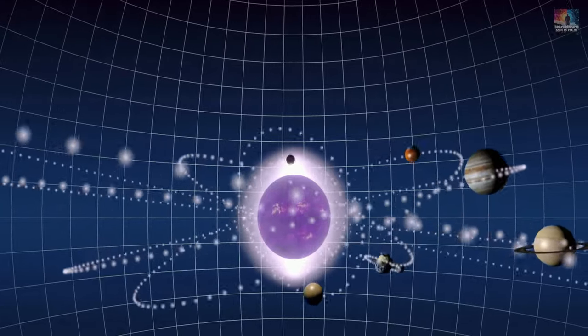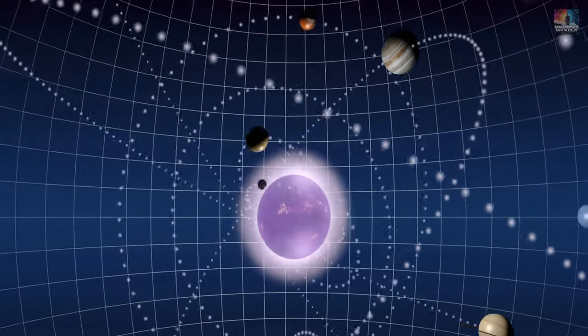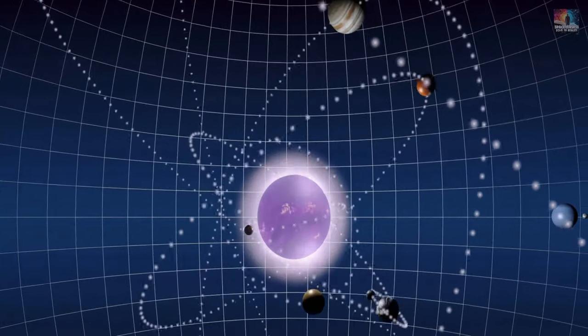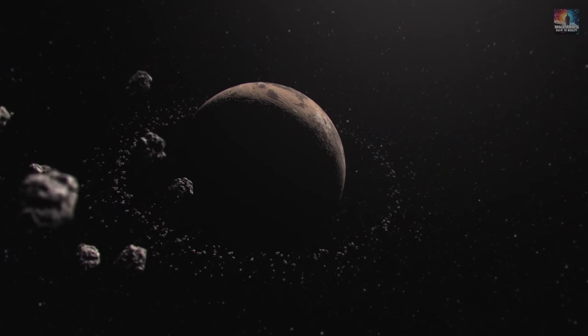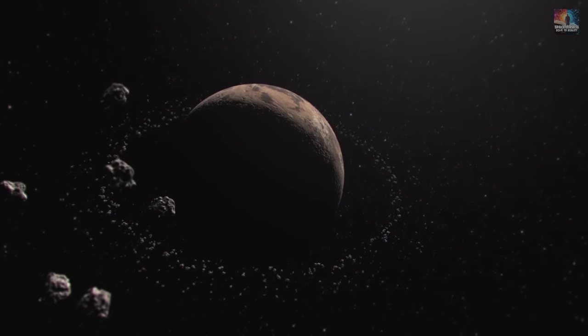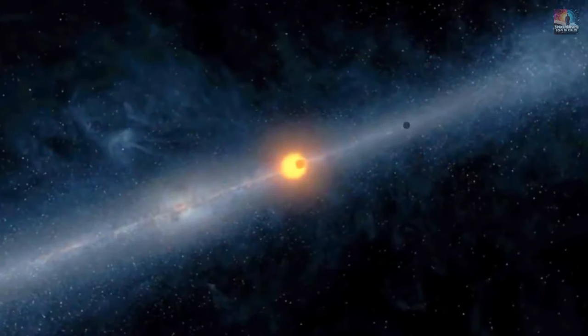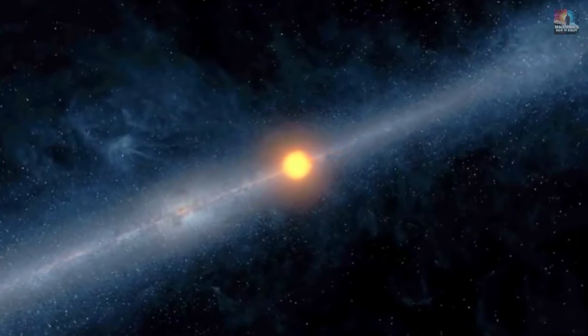So when it comes to the three-body problem, the exact positions and speeds of the three objects at the beginning can totally change what happens to them in the future. Even a tiny tweak in the starting setup can lead to totally different outcomes. This makes it really hard to guess where things will end up over time. In fact, sometimes it feels almost impossible to make long-term predictions about how these objects will move and interact with each other.